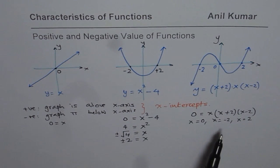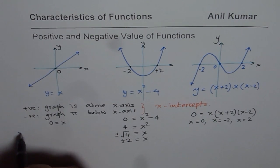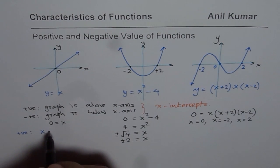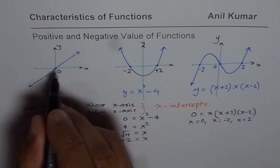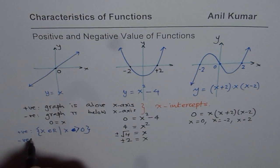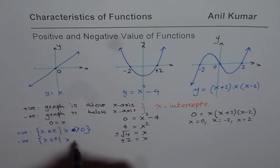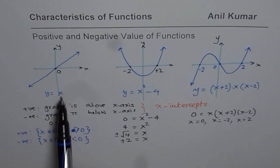The first step is to find the x-intercepts. Once the x-intercepts are known, you can exactly write when the graph is positive and when it is negative. For the first function y equals x: positive is when x is greater than 0, and for negative, x belongs to real numbers where x is less than 0. That is how you write the interval in which y equals x is positive or negative.